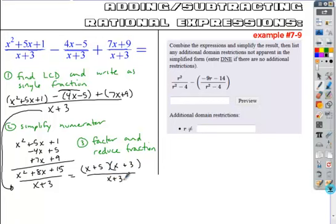So once I write this in its factored form, I can cancel any common factors, and I get my solution, x plus 5. Because I canceled a factor from my denominator, I do have to restrict that as an additional domain restriction, and this would be my solution, x plus 5, x not equal to negative 3.